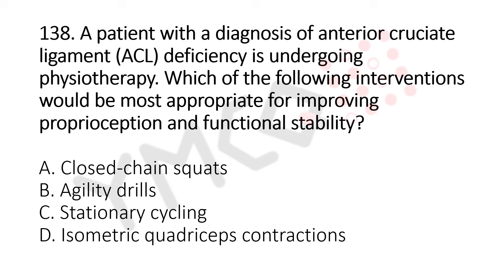Now let's move to question number 138. A patient with a diagnosis of ACL deficiency is undergoing physiotherapy. Which of the following interventions would be the most appropriate for improving proprioception and functional stability? Option A: closed chain squats. Option B: agility drills. Option C: stationary cycling. Option D: isometric quadriceps contraction. The answer is option B: agility drills.